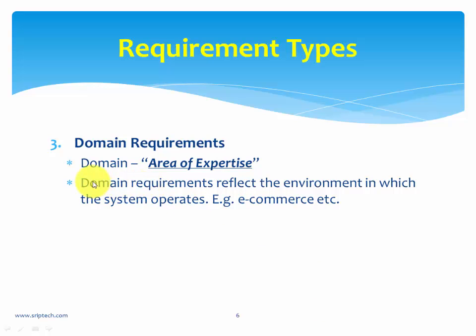There is another requirement type called a domain requirement. Domain basically means the area of expertise — for example, insurance, banking, or CRM. Domain requirements reflect the environment in which the system operates. Since we are talking about an ATM, we are focused on a banking domain. Any requirements that come from the banking domain, such as certain banking rules and policies, are called domain requirements.